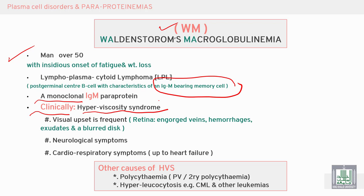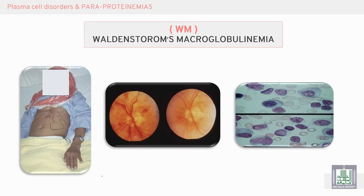Hyperviscosity syndrome can progress to heart failure. Other causes include polycythemia, chronic myeloid leukemia, and other leukemias characterized by hyperleukocytosis. The differential diagnosis of hyperviscosity syndrome includes first Waldenström's macroglobulinemia, then polycythemia, then hyperleukocytosis. Waldenström's is specifically characterized by hyperviscosity and visual disturbance.